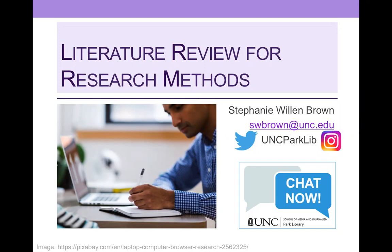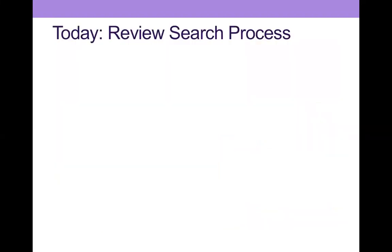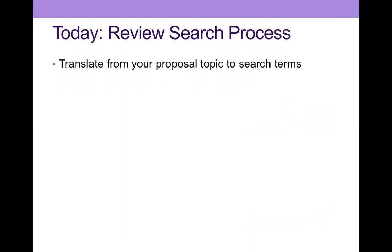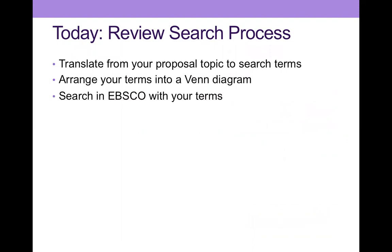What we're going to do today is talk about how to find articles for your lit review. We're going to review what we went over last month in orientation, and we're going to translate from your proposal topic to search terms. I'm going to show you how to do that with a couple of different search topics. We're going to arrange your terms in a Venn diagram and then go from that to an EBSCO search, and I want you to have a little bit of practice doing this with your topics before we meet.